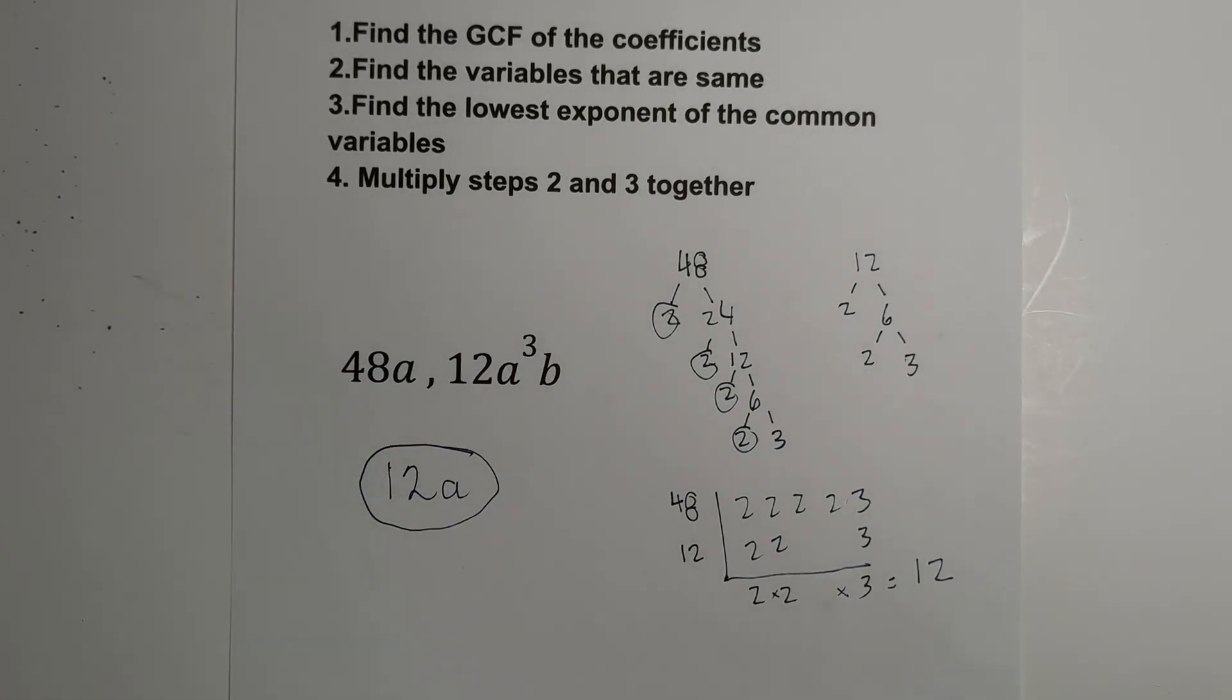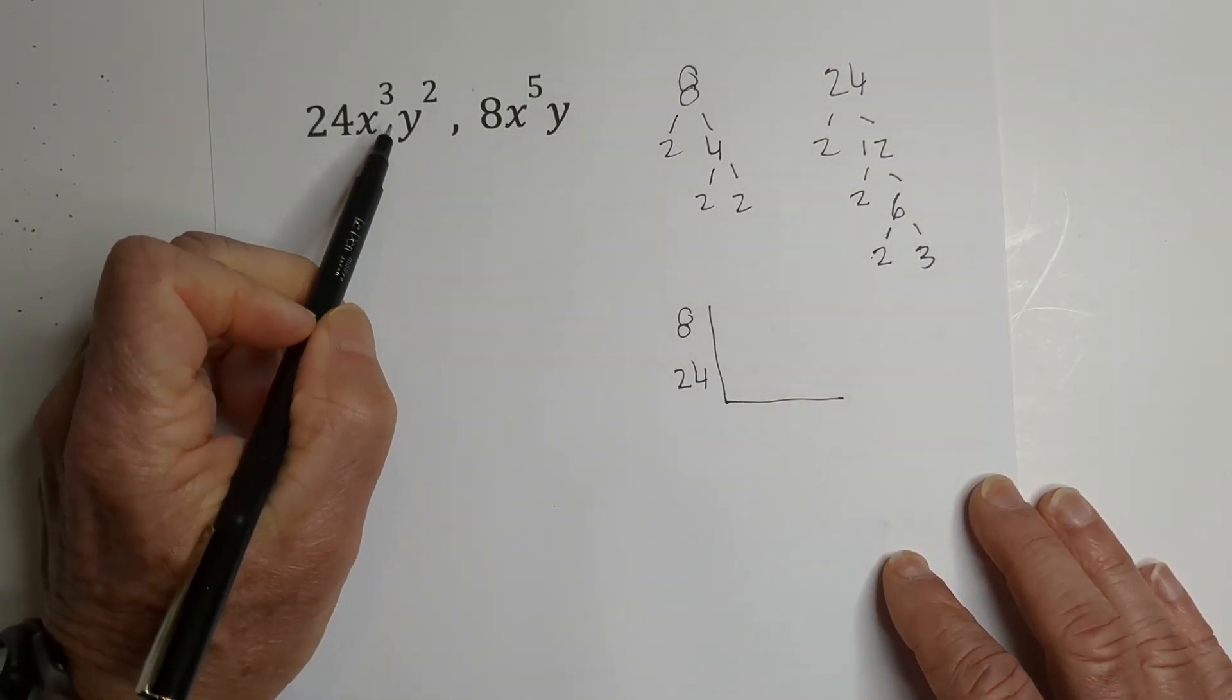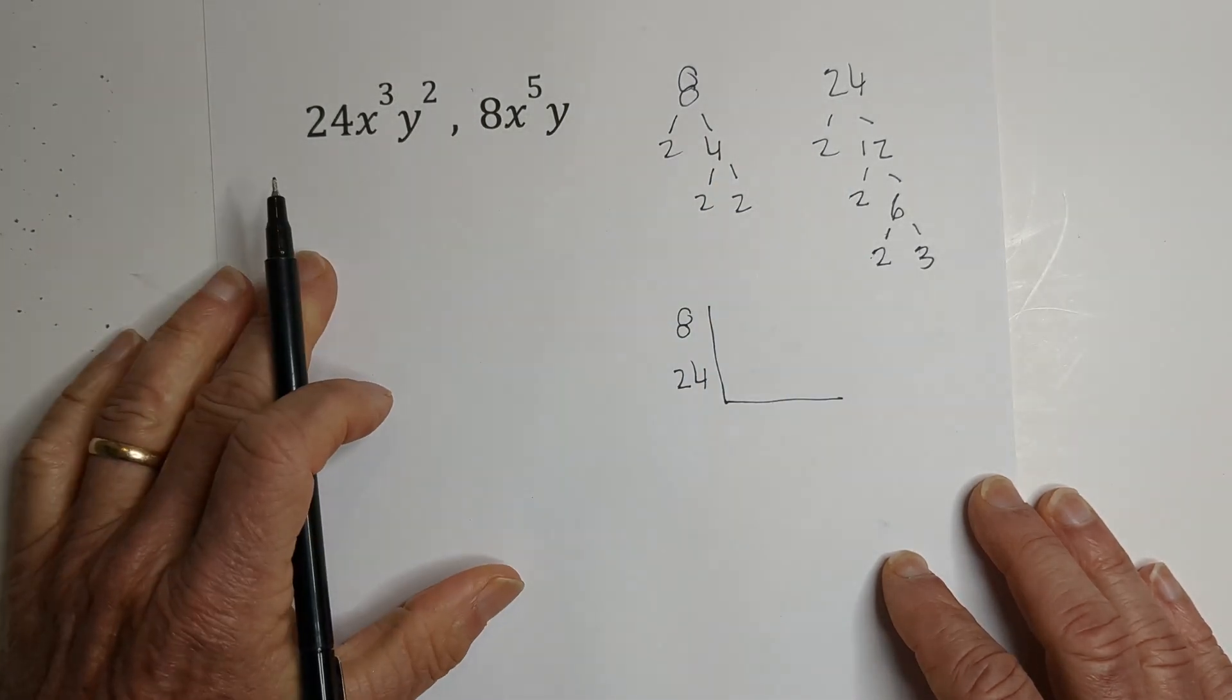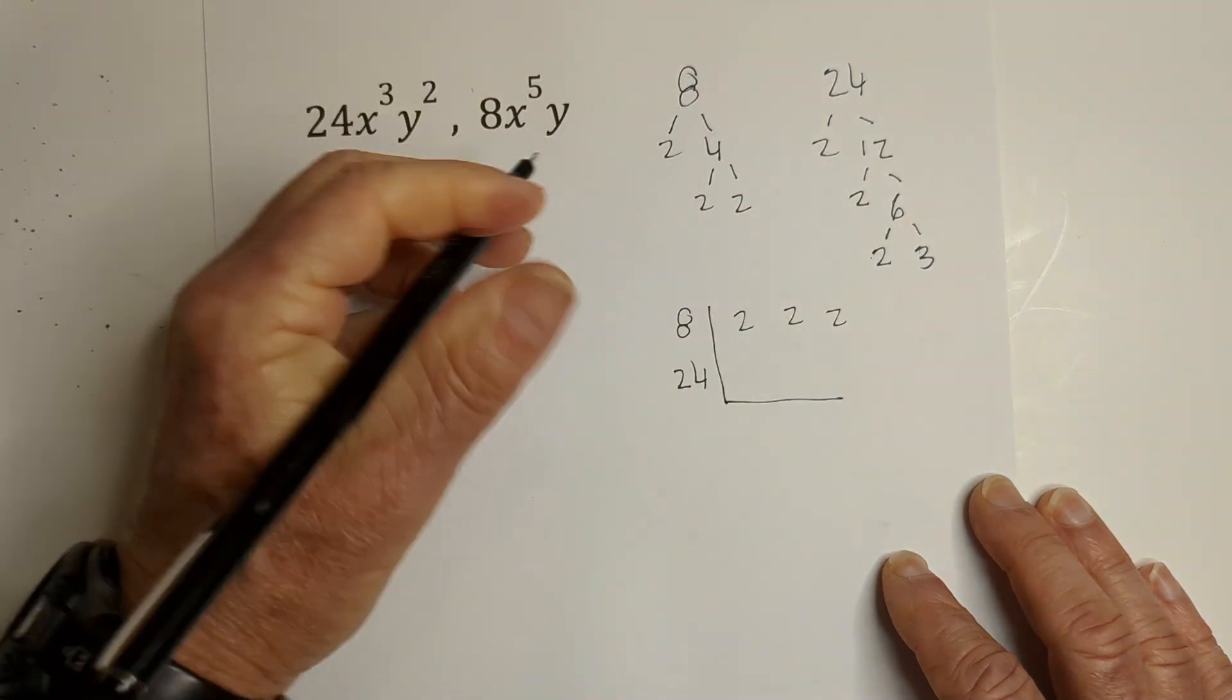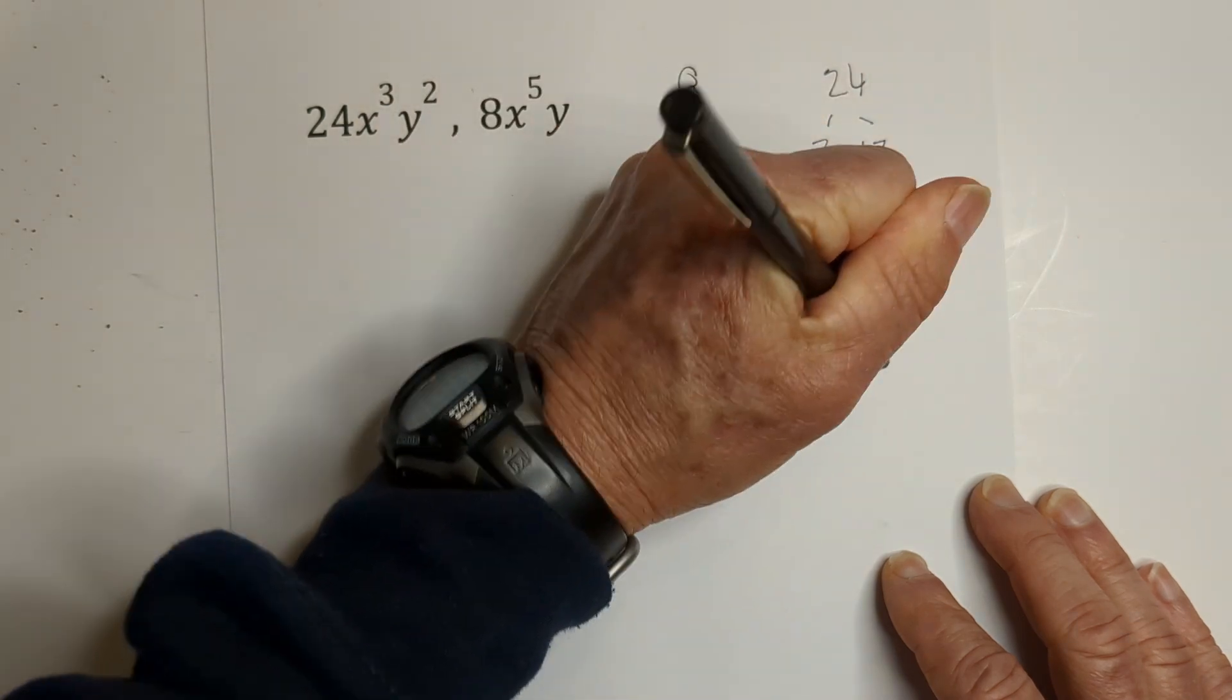Let's work another example. So now we're going to find the greatest common factor of 24x cubed y squared, 8x to the 5th y. I've already done a factor tree for this. So I'm going to write 2, 2, 2, and then we have 2, 2, 2, 2, and 3.